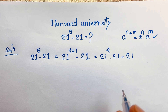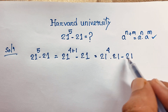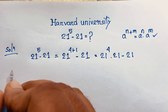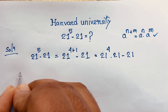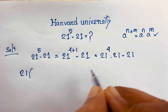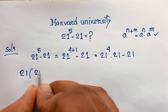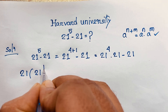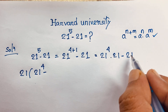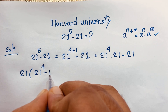Now you can see that 21 is common in both terms. So if I take 21 as a common factor, dividing gives us 21 to the power 4, and 21 divided by 21 equals 1.